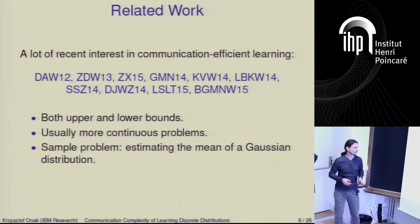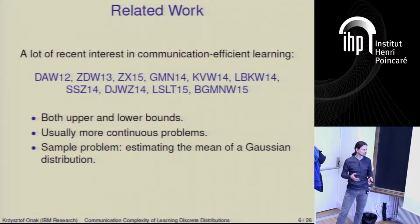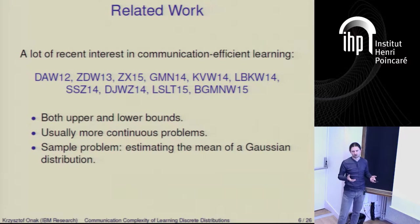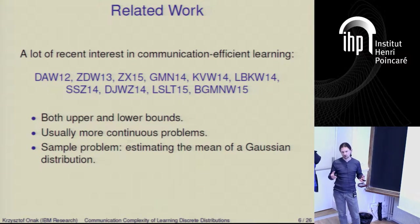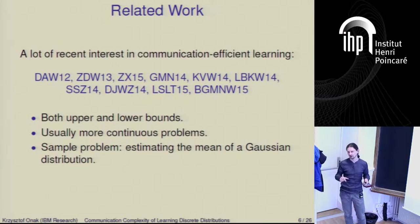This question of communication-efficient learning has been quite popular lately, but most work has been focusing on continuous problems. One example where people made quite a bit of progress is: you receive samples from some multidimensional Gaussian distribution and the question is what is the mean of this distribution. We are able to show that it's impossible to eliminate a factor of the dimension — there is some required amount of communication for a single dimension, and if you have multiple dimensions, this communication goes up by a factor equal to the number of dimensions.